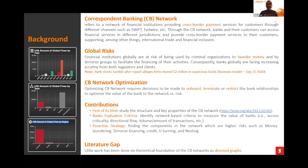In recent years, one of the biggest issues with correspondent banking is global risk, because financial institutions are at risk of being used by criminal organizations for money laundering or by terrorist groups to facilitate the financing of their activities. There is a huge risk. If you look at the charts on the left side of the slides, you can see how significant the global fines are due to sanctions or other restrictions and regulations — for example, the amount of global fines by region. North America is significantly greater than other continents.